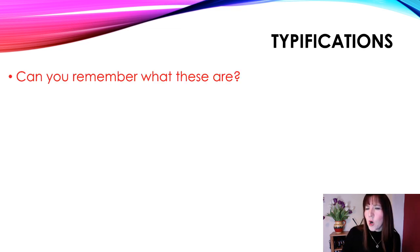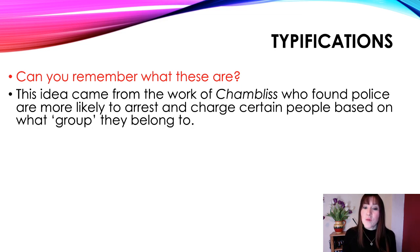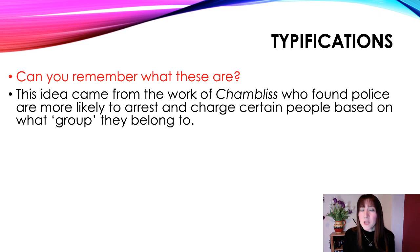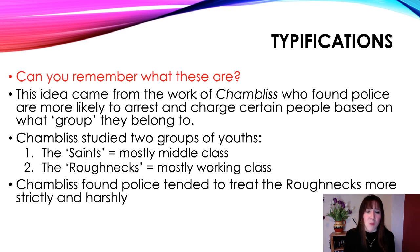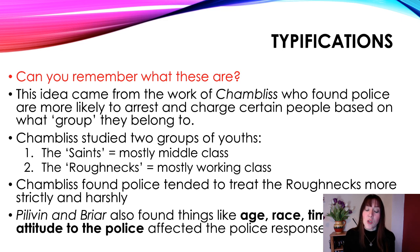Typifications — you may have come across that word before. A typification, from the work of Chambliss, is the idea that police are more likely to arrest and charge certain people based on what group they belong to. It's a bit like a stereotype — the type or classification you fall into affects how police treat, arrest, and charge you. Chambliss studied two groups of youths: the Saints, mostly middle class, and the Roughnecks, mostly working class. He found police tended to treat the Roughnecks more strictly and harshly, whereas the Saints probably just got a slap on the wrist.